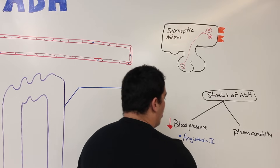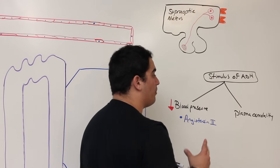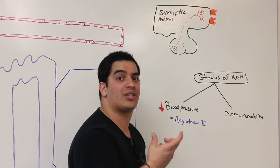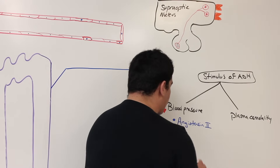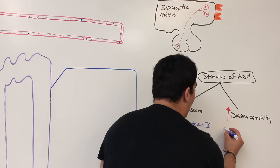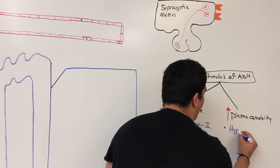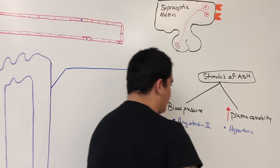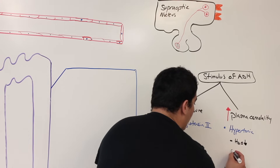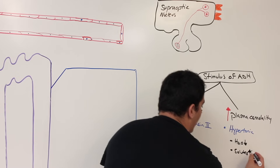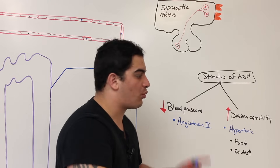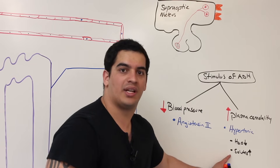What does the plasma osmolality have to be? Usually if blood pressure is low, there's some reason that blood volume is low, so there might not be as much water. If there's very little water in our blood, the blood is very hypertonic — it has a lot of solutes and very little water. When something's hypertonic, the plasma osmolality is said to be high. The water-to-solute ratio is thrown off, and that's a problem because ADH has to regulate that.